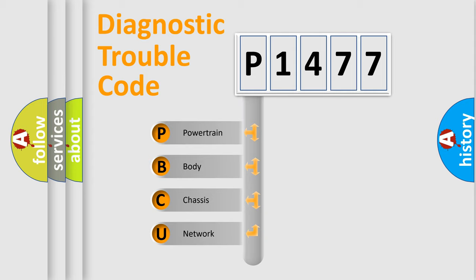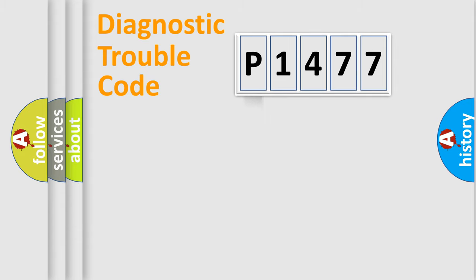We divide the electrical system of automobiles into four basic units: Powertrain, Body, Chassis, and Network. This distribution is defined in the first character code.